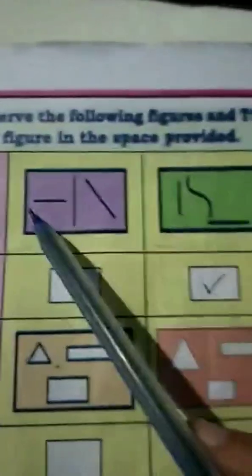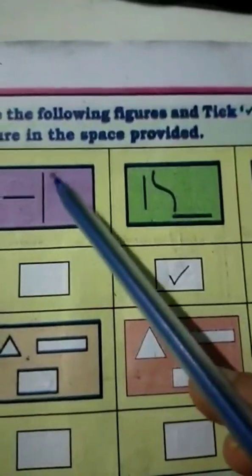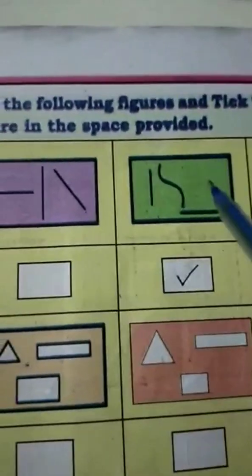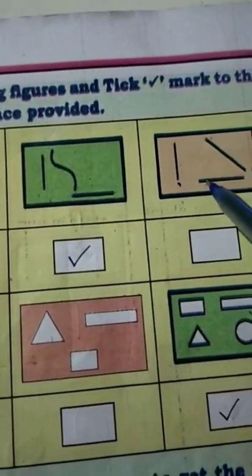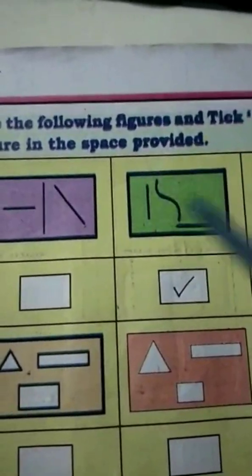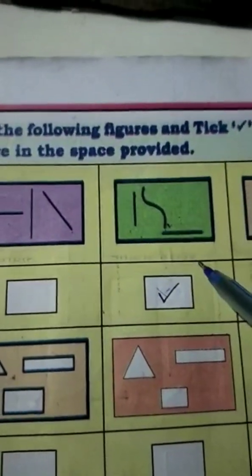Next, observe the following figure and tick the odd figure. In the first picture you can see a horizontal line, vertical line, and slanting line. In the second picture it's a vertical curved line and horizontal line. In the third picture you can see a vertical, horizontal, and slanting line. The second picture is odd because it has a curved line, so I put the tick mark there.